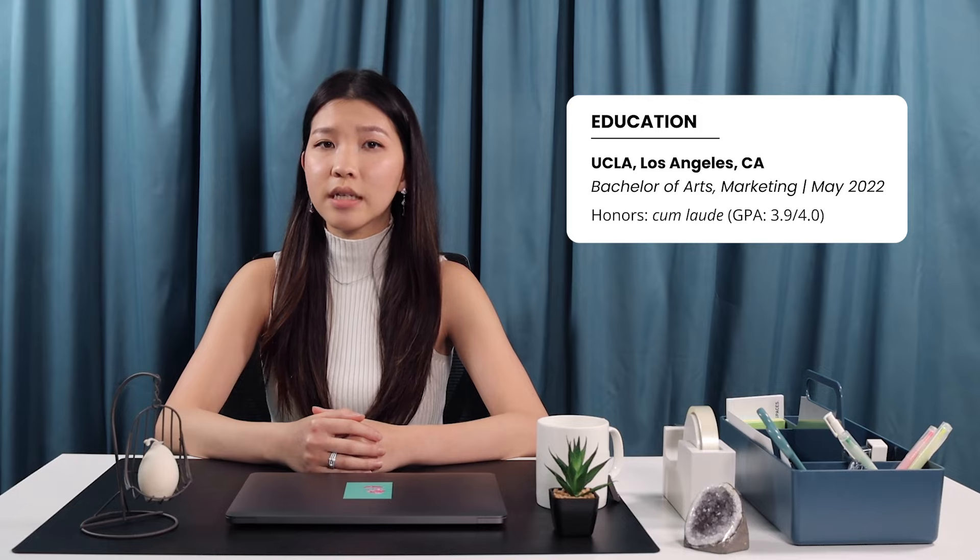Now that your experience section is ready, it's time for the fun part: the education section. Here you can get a little more creative because different schools have different extracurriculars, scoring systems and academic related achievements. Just like in your experience section, write down the name of the school you attended, along with the name of your degree and the years listed below. You can add both your high school and college if you had a high GPA in both, but normally you should just list your highest degree.